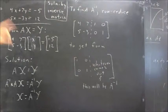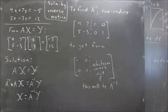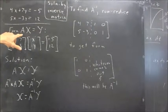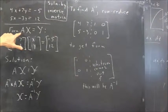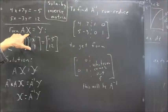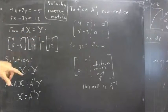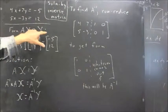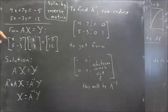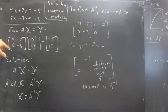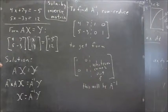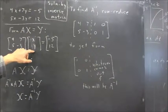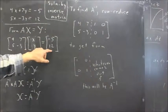This system can be written, as we saw a couple of classes earlier, in the form A times an X vector equals a Y vector. If we write out the coefficient matrix, 4, 7, 5, negative 3, multiplied by XY, we get negative 5, 12.